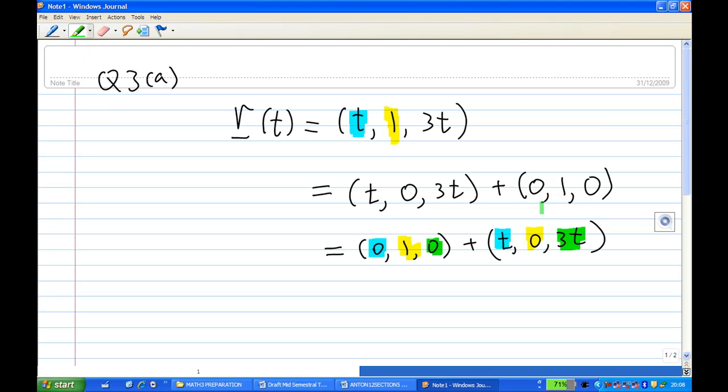Then afterwards we factor out the t. This will give (0, 1, 0) + t(1, 0, 3). T times 1 is t, t times 0 is 0, t times 3 is 3t.